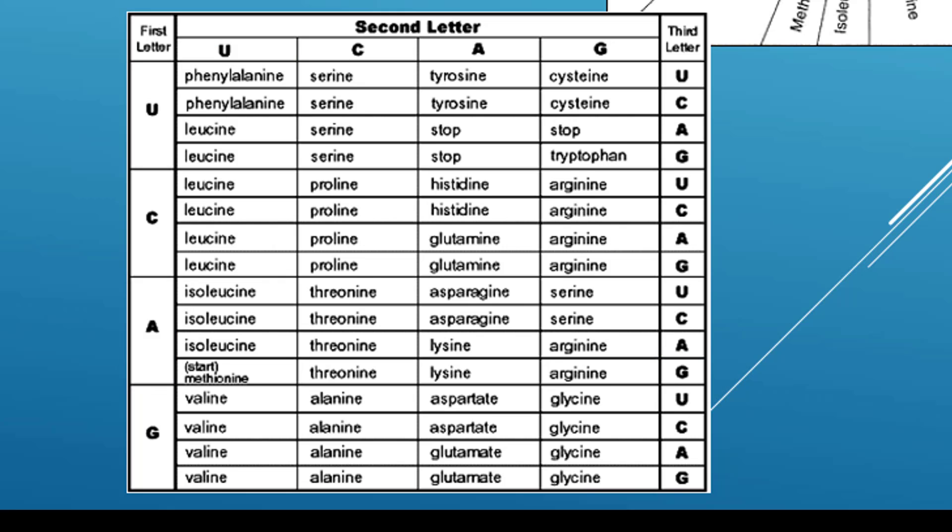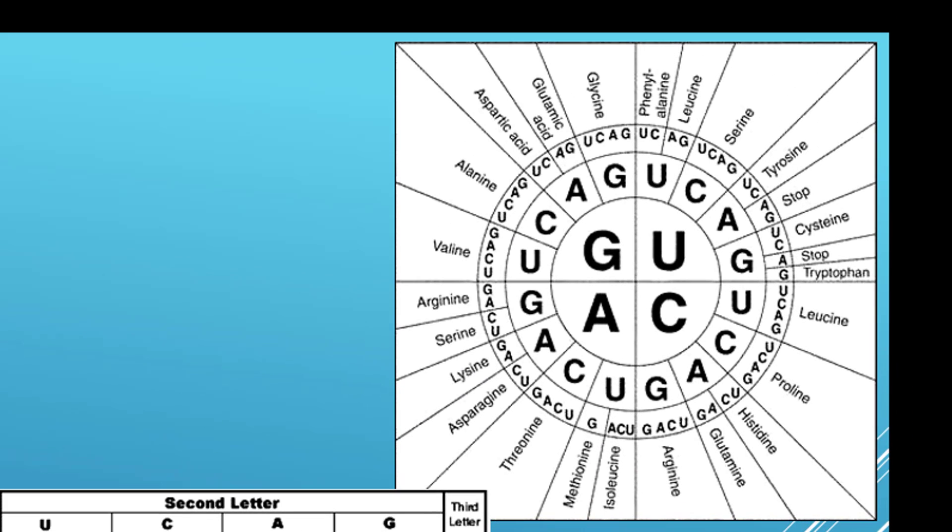Now, I'm going to shift over to the circle chart. On the circle chart, you just start from the center and work outward. If your first letter is A, you find the big A, then connected to that A you find the U, then connected to that U you find the G, and where all those three spokes line up, that's your start codon, which also gives you the amino acid methionine.